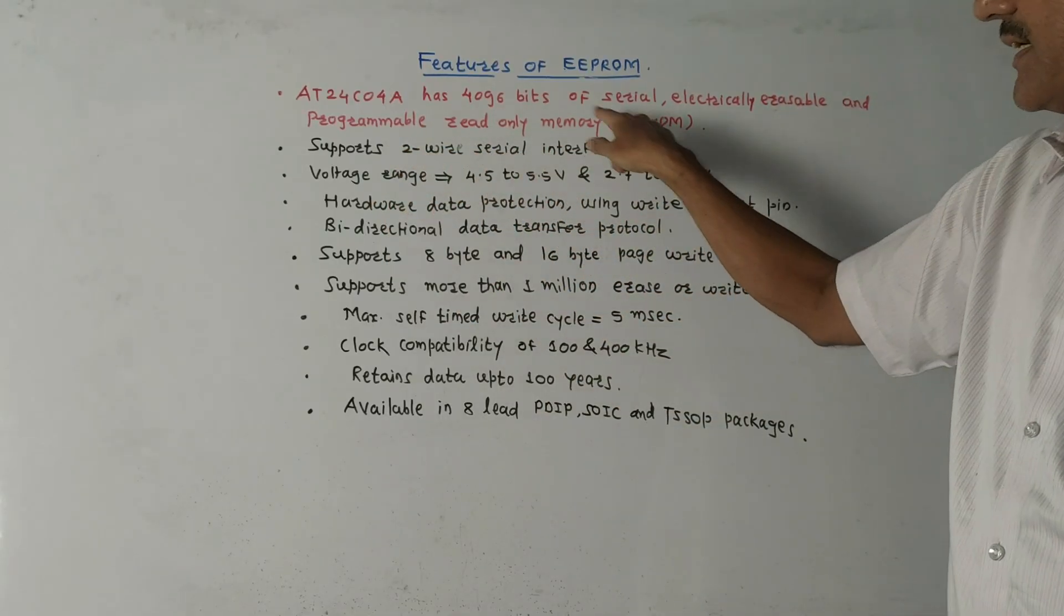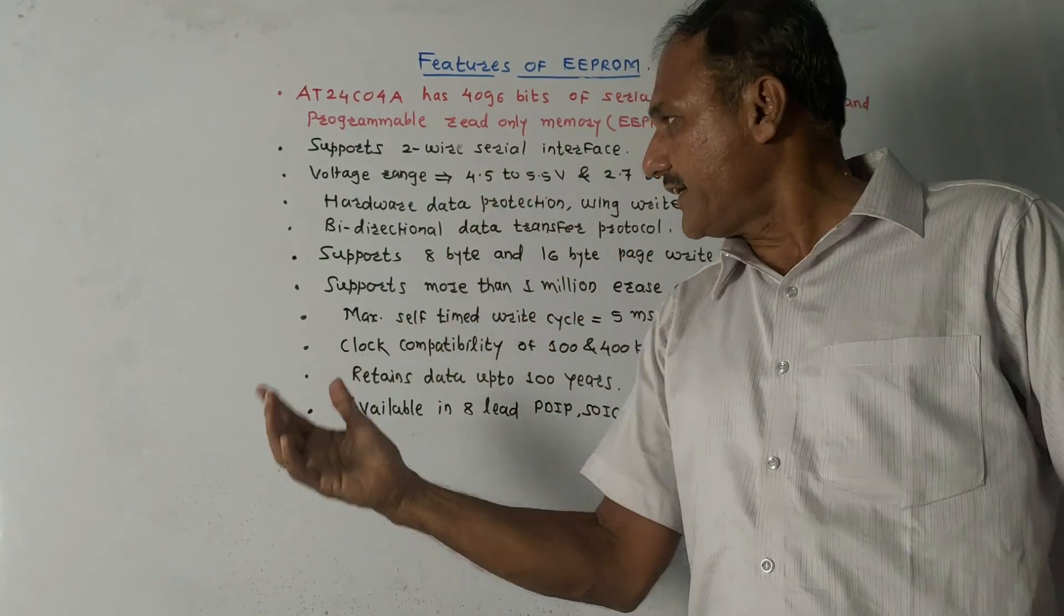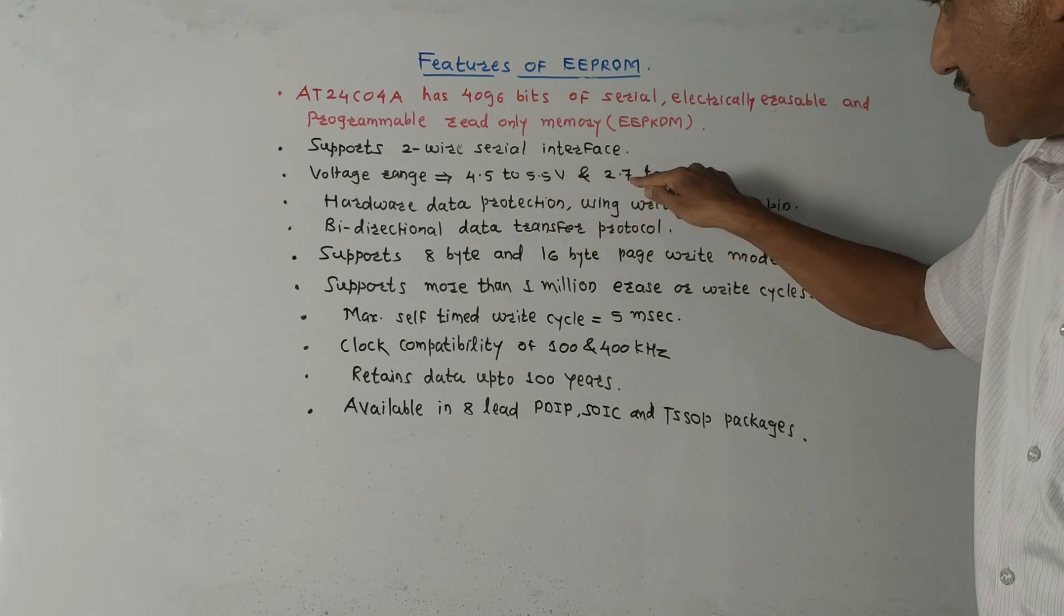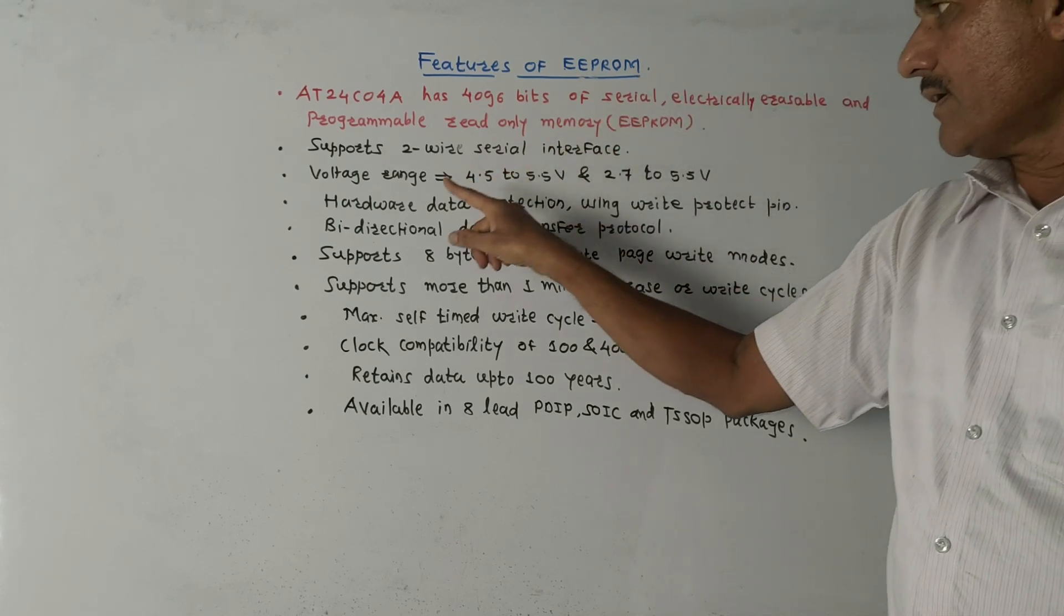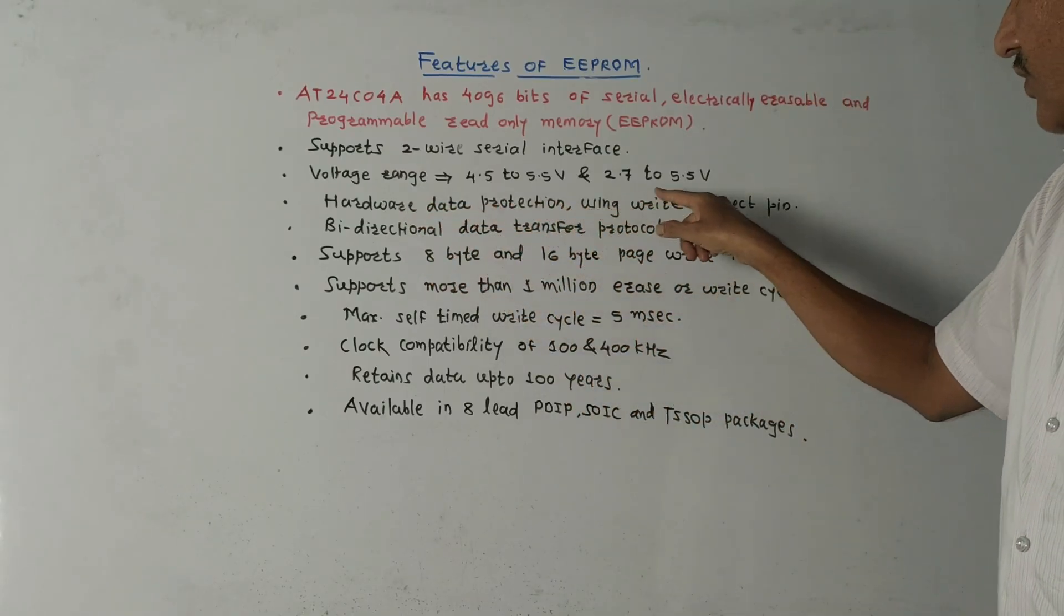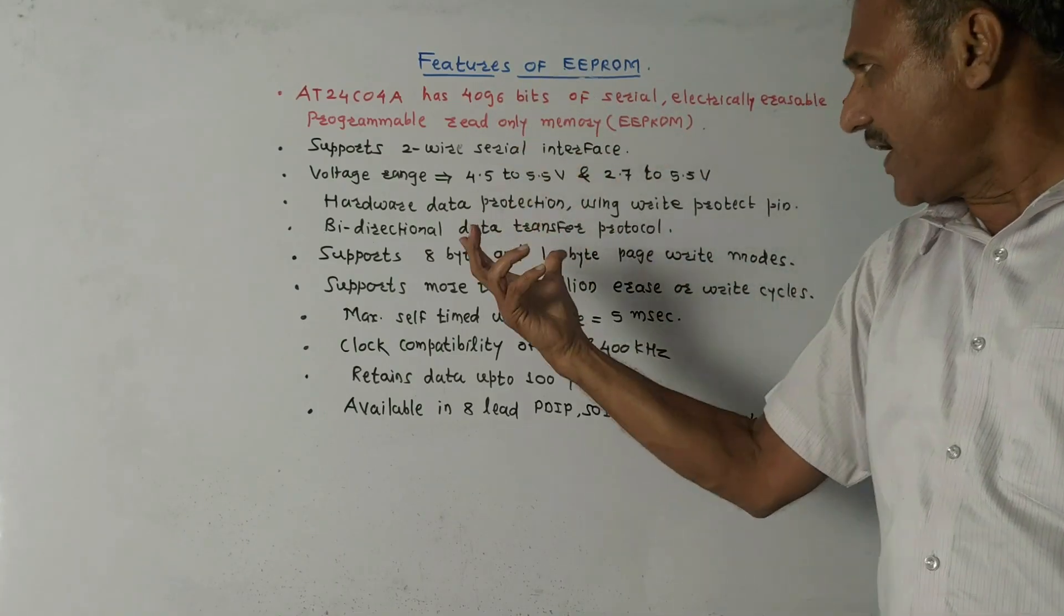The voltage range is medium voltage 4.5 to 5.5 volts and standard 2.7 to 5.5 volts. It has hardware data protection. Using write protect pin we can safeguard the hardware.